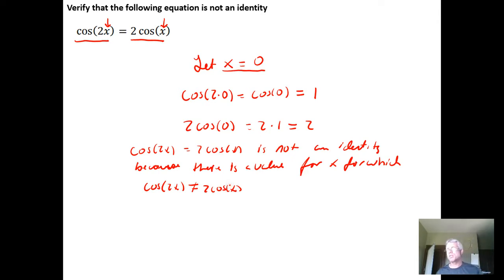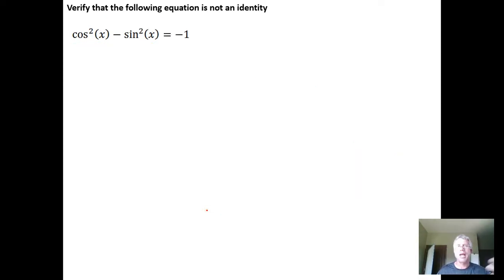Now that doesn't mean there aren't values of x for which the two sides are equal. It just means we can find one where they are not equal. Therefore, it is not an identity.